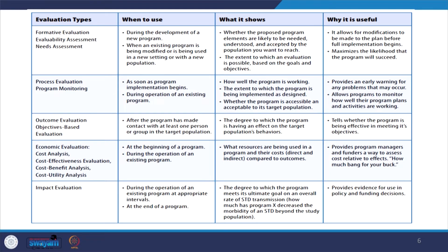For process evaluation or program monitoring, when to use: as soon as program implementation begins, or during operation of an existing program. What it shows: how well the program is working, the extent to which the program is being implemented as designed, and whether the program is accessible and acceptable to its target population. Why it is useful: because it checks on the process, guarantees the right delivery of the program, and provides an early warning for any problems that may occur.